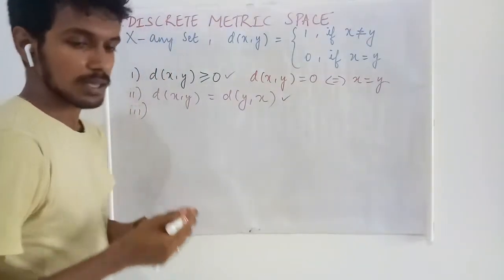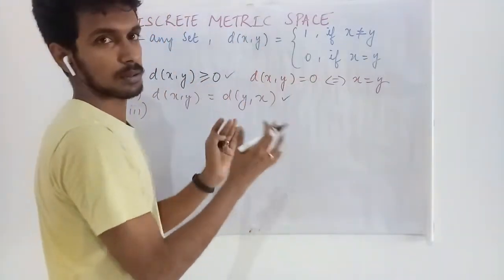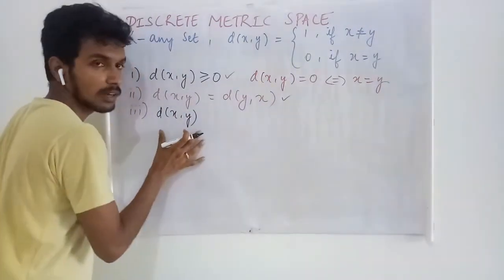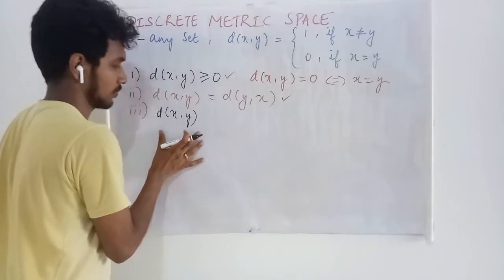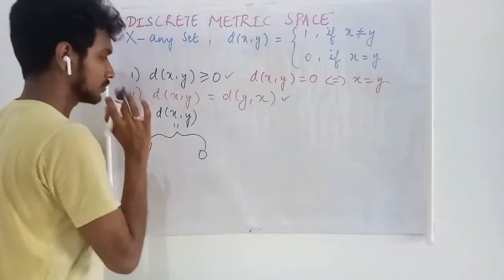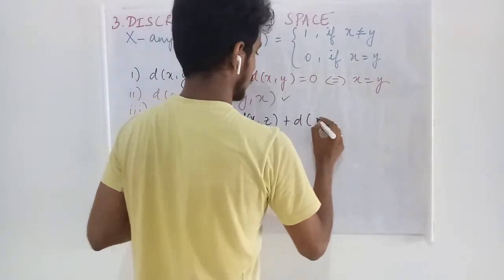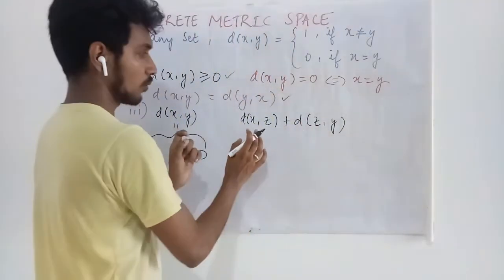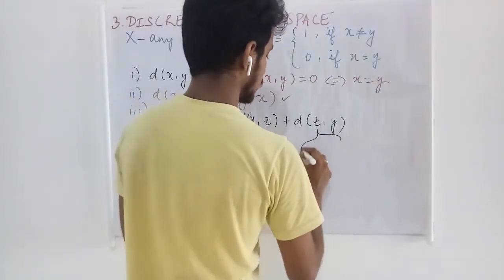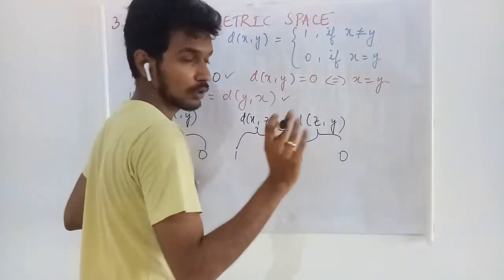The third one. Here comes the main part of this proof. d(x,y)—what can be the value of d(x,y)? It is either 1 or 0. Let me find this one as well. What can it be? It can be either 1 or 0. The same here. In this case, we will have four things.